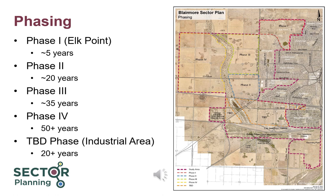Phase 3, located west of Kensington and expected to be developed as two neighbourhoods, is expected to begin in roughly 35 years. Phase 4, located west of the Swale and expected to be developed as three neighbourhoods, may be more than 50 years away. The industrial area has less certain timelines; however, the need for servicing will dictate that the industrial area cannot realistically proceed until Phase 2 is serviced, meaning development of the industrial area will likely begin more than 20 years from now.